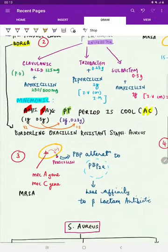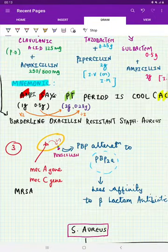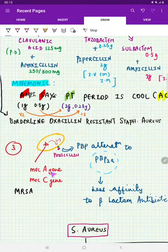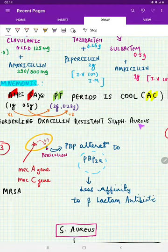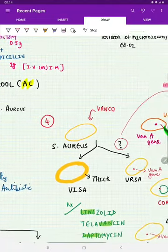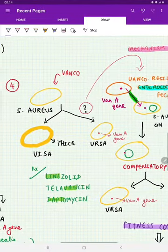And what are the other types where there is resistance? There can be expression of MecA gene and MecC gene. By this expression, what happens is the penicillin-binding protein is altered, and because of that alteration, the affinity to the beta-lactam antibiotics is decreased. Then as a result of that, the infection persists. So MecA gene, MecC gene.